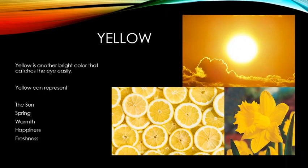Yellow is another bright color that catches the eye easily. It can represent the sun, spring, warmth, happiness, and freshness. We see a lot of yellow in springtime when the sun shines more, in early flowers like daffodils and forsythia, and it's associated with lemons and a citrusy freshness.